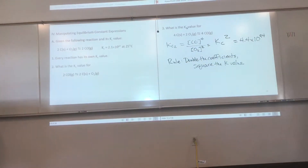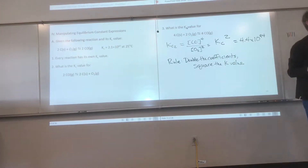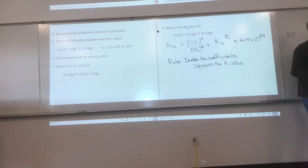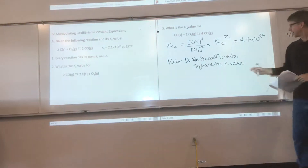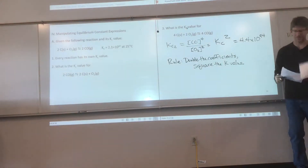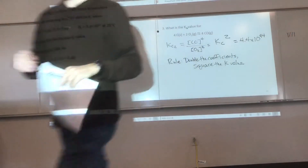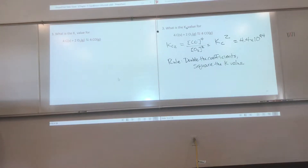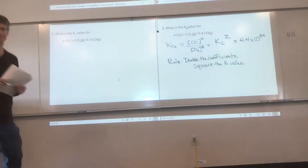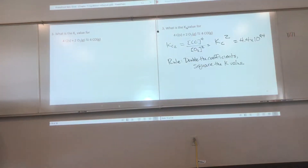Wow, that's a large number—my calculator almost couldn't handle it. The rule: double the coefficients, square the K value. Everything with equilibrium constants is capital K. So far we've seen Kc and Kp; we'll also see other Ks as we go.